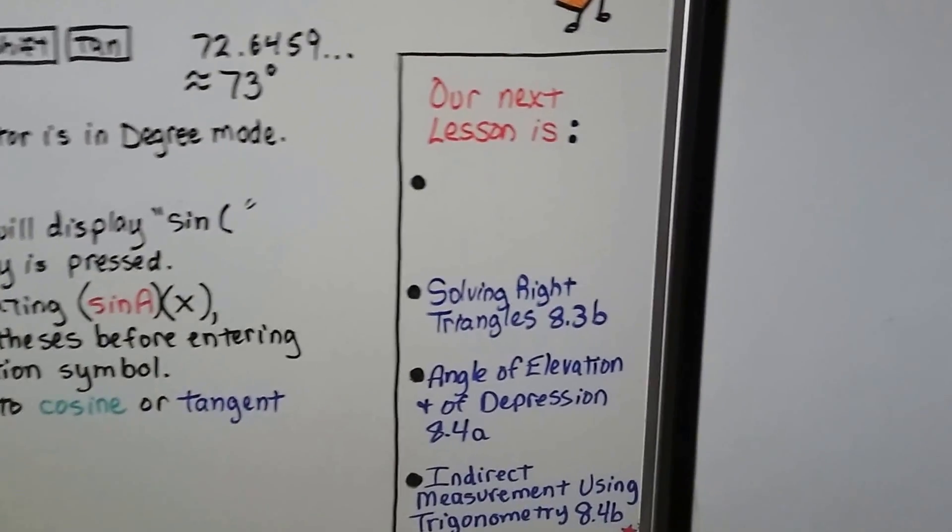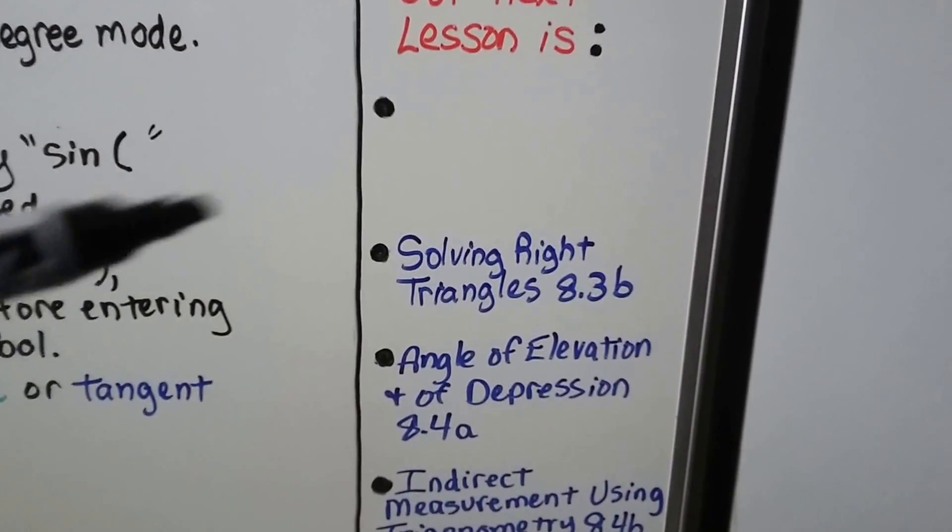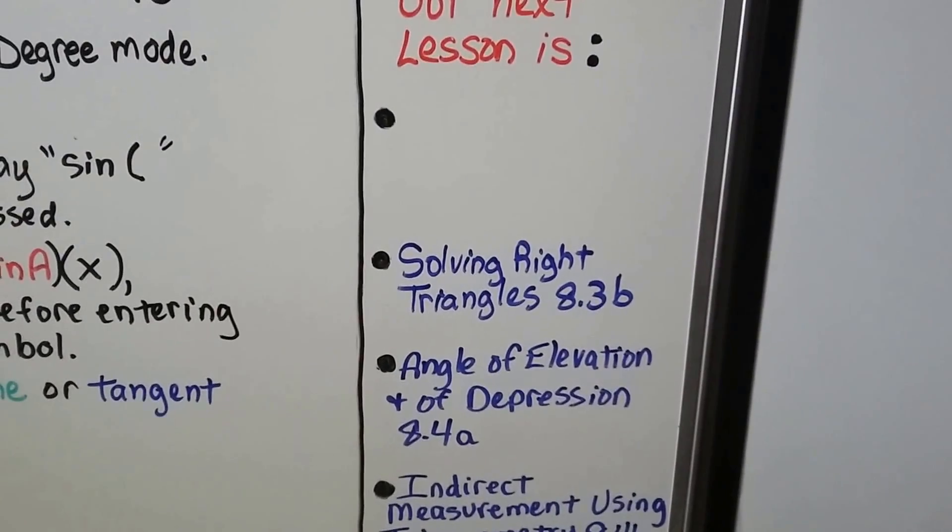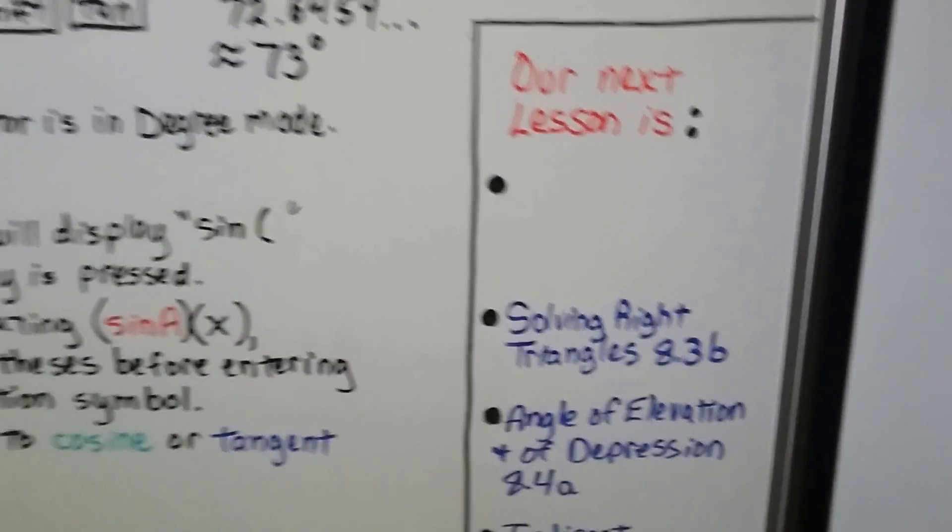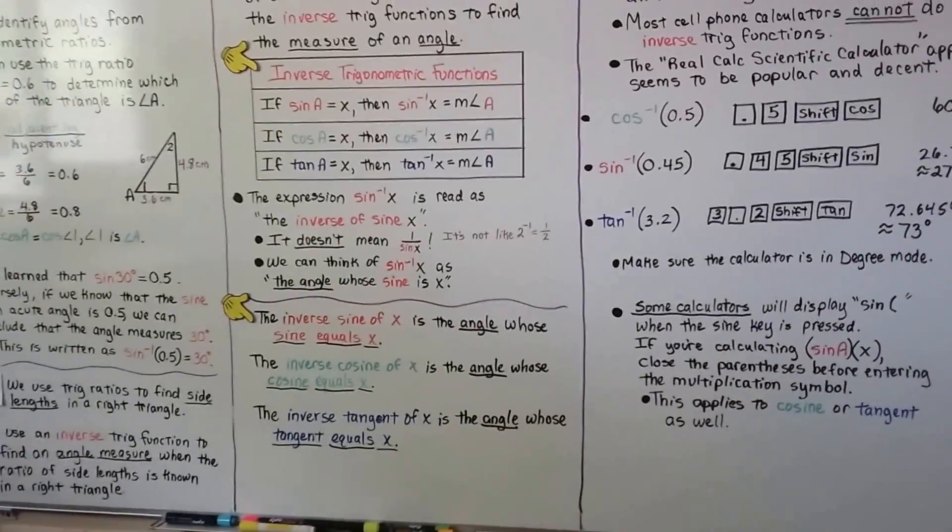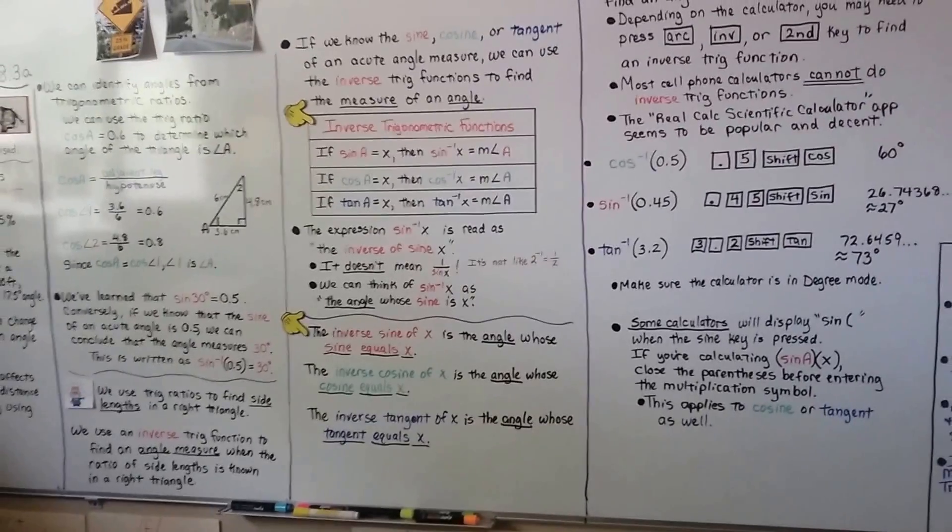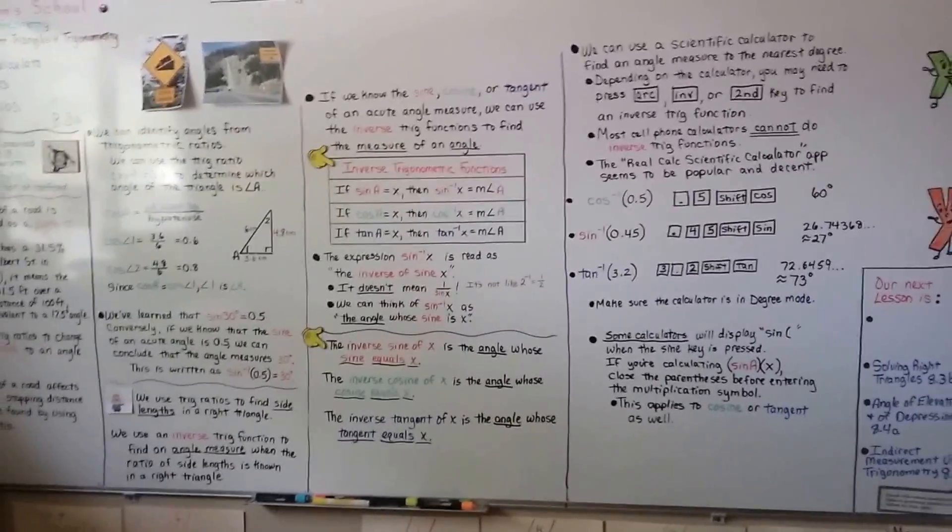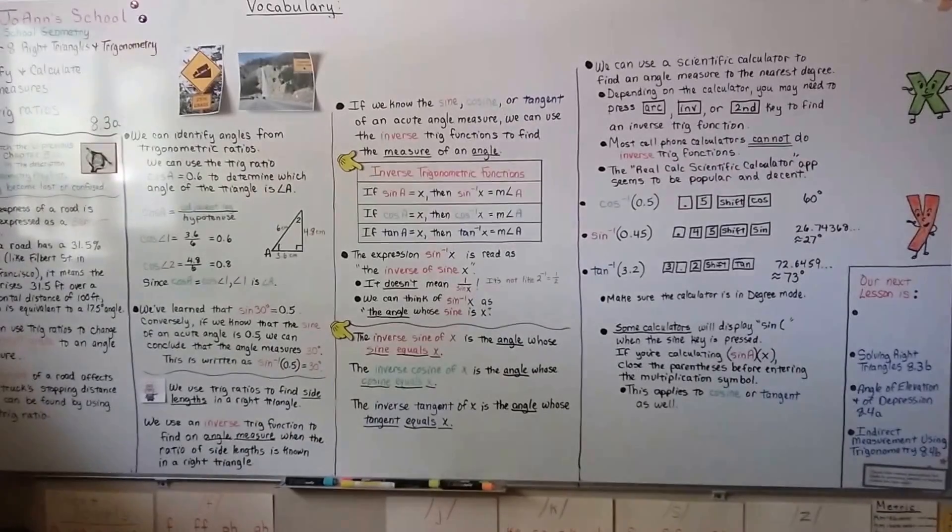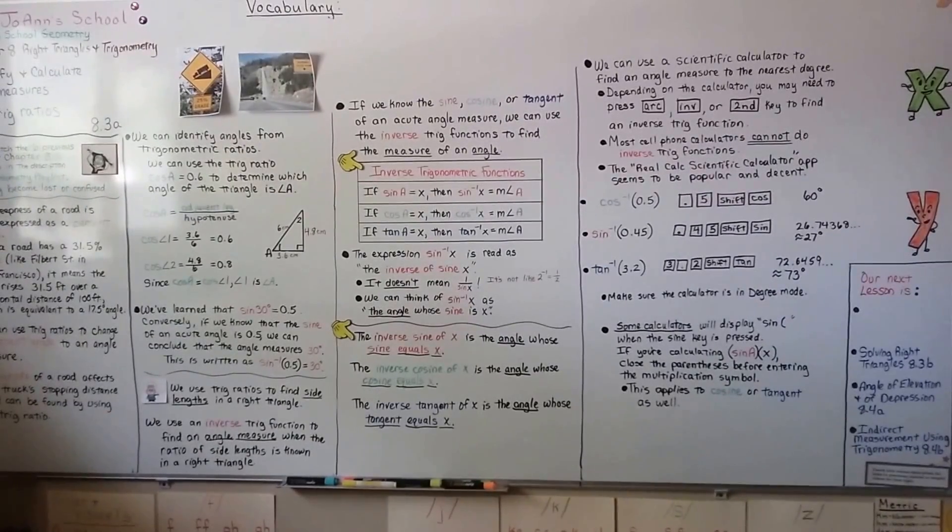Our next lesson is solving right triangles. That's going to be 8.3b before we move on to angle of elevation and depression in 8.4. Now you know about the percent grade of a road, and I hope you took good notes because this will be helpful for you. I'll see you next time, and have a great day. Bye!